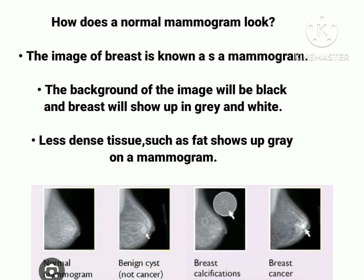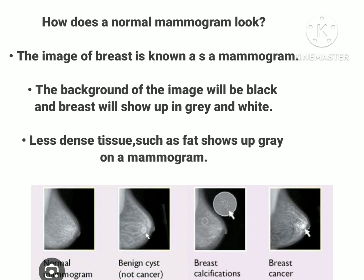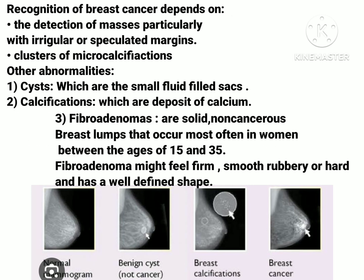How does a normal mammogram look? You can check the image showing a normal mammogram of the breast. The background color is black, and the breast shows up in gray and white. Gray represents the less dense tissue of the breast, which is fat, while white represents the more dense tissue. It can be very difficult to detect abnormalities because tumors — also made of dense tissue — also appear white. More white on the image does not always indicate a health problem, and since everyone's breasts are different, no two mammogram images will be the same.